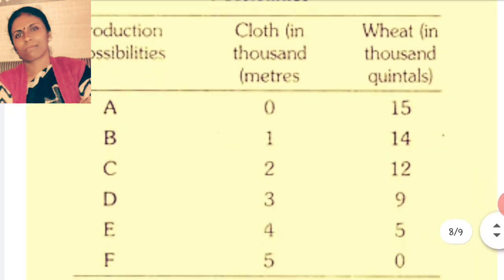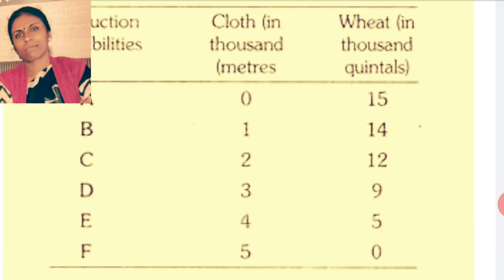Let us try to understand this production possibility curve with the help of a given example. In this table, three columns are given: possibilities, cloth in 1000 meters, and wheat in 1000 quintals. There are six combinations: A, B, C, D, E, F. If all the resources of the nation are fully employed to produce wheat, the economy produces 15,000 quintals of wheat and 0 meters of cloth. If all the resources are fully used to produce cloth, only 5,000 meters of cloth is produced and 0 quintals of wheat.